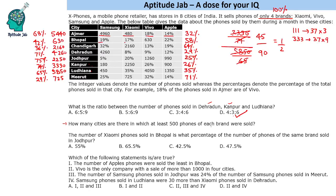Next question: how many cities are there in which at least 500 phones of each brand were sold? We need to use some guesswork and look at the table. Without calculating, we can say this is not possible where 480 is mentioned. Let us rule out all values where it is clearly not possible. We can rule out Ajmer, Kanpur, and Ludhiana — for these three we do not even have to look at the table.